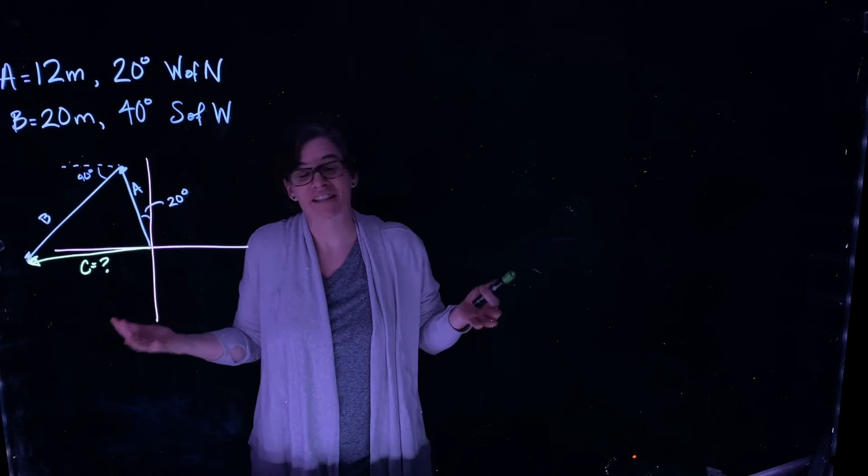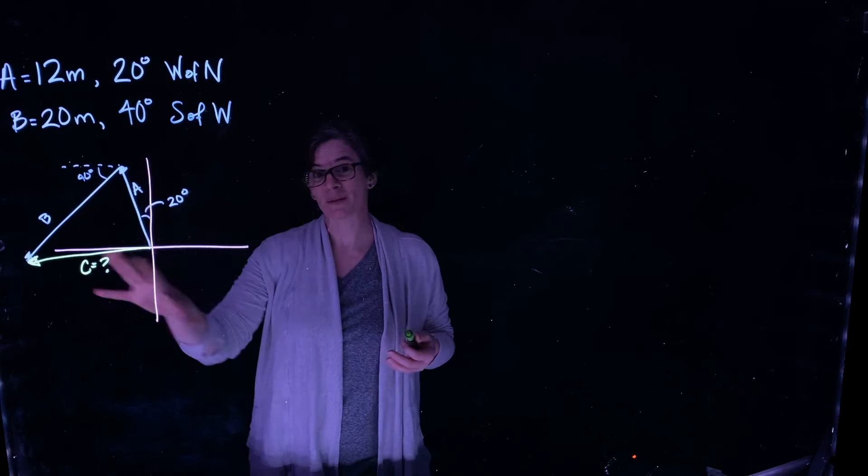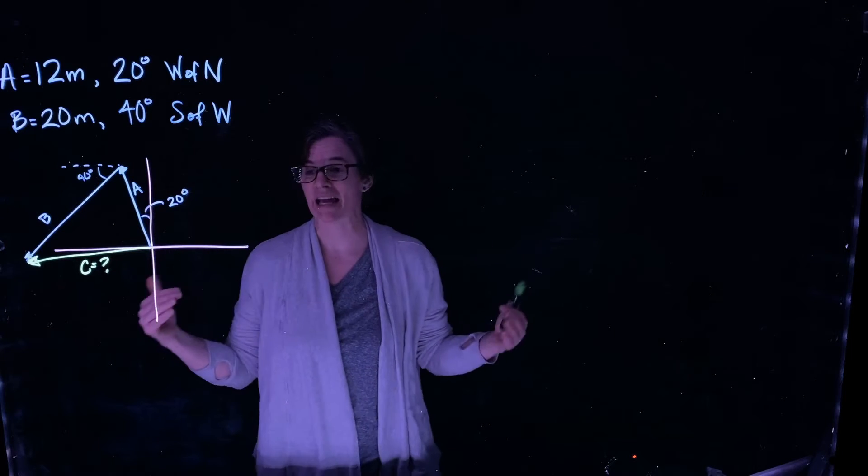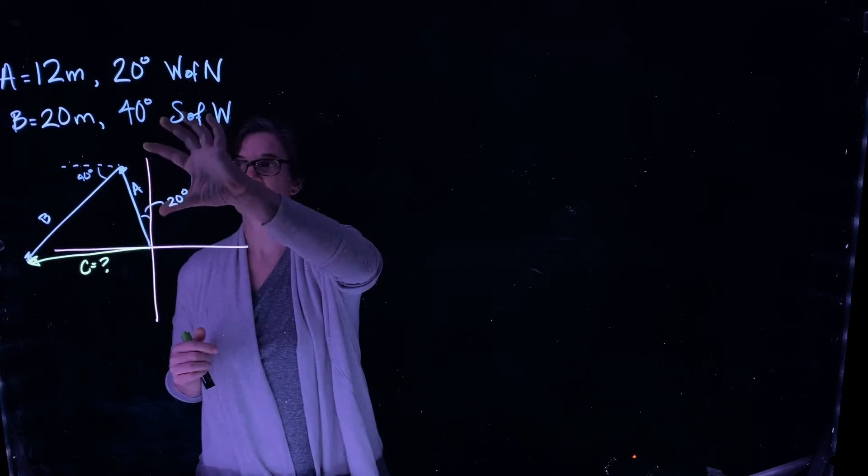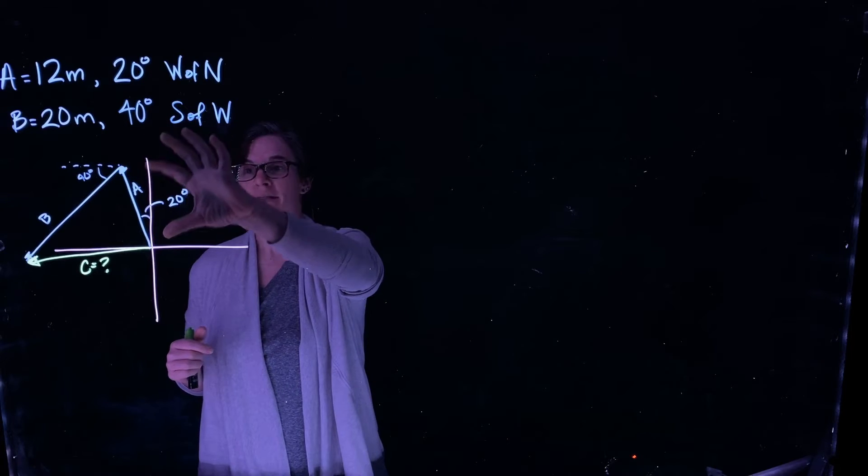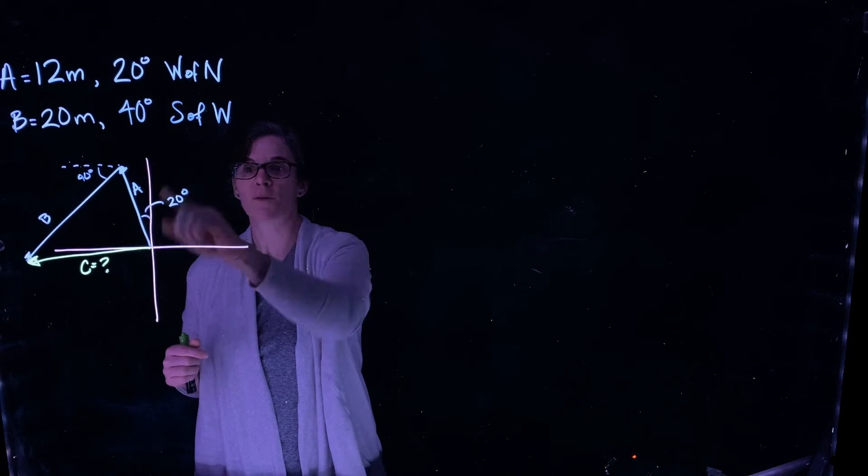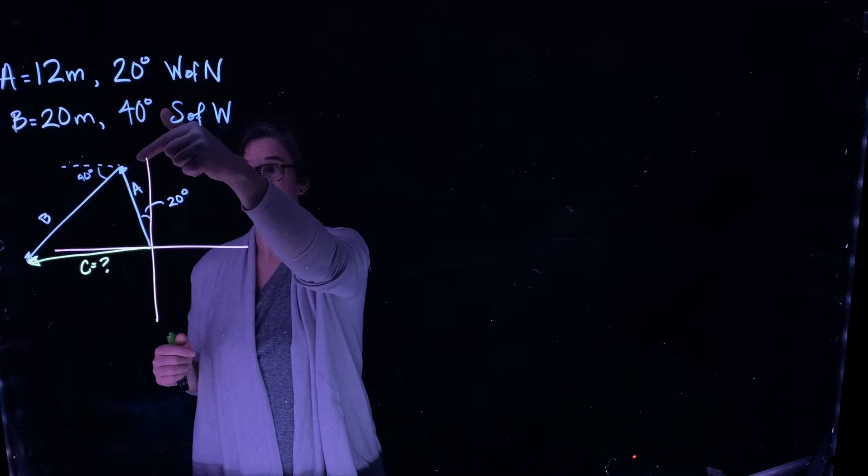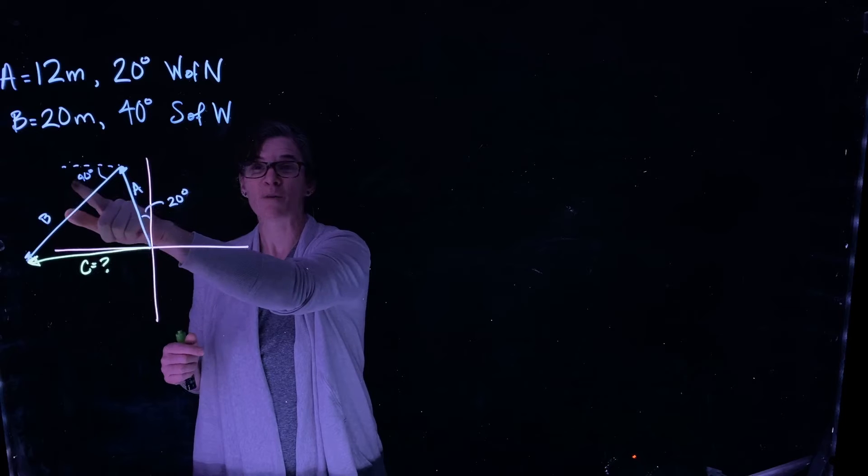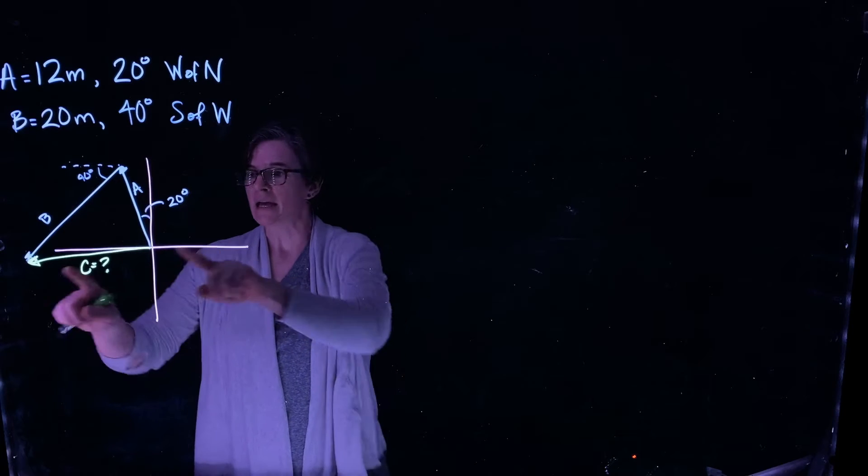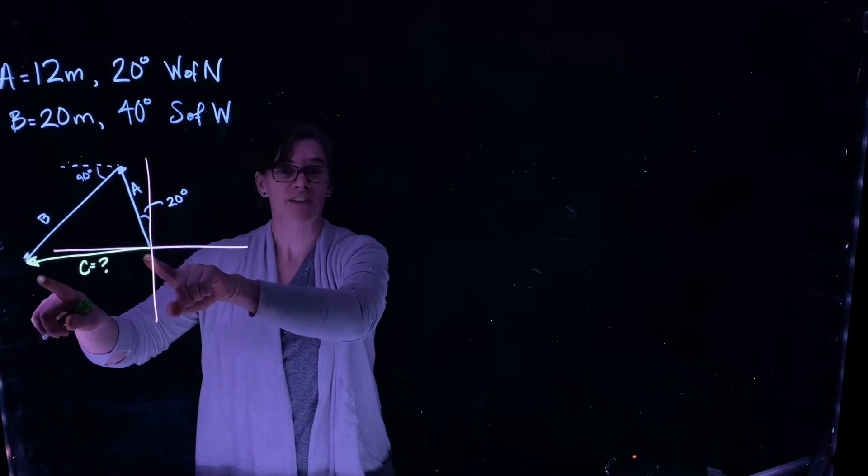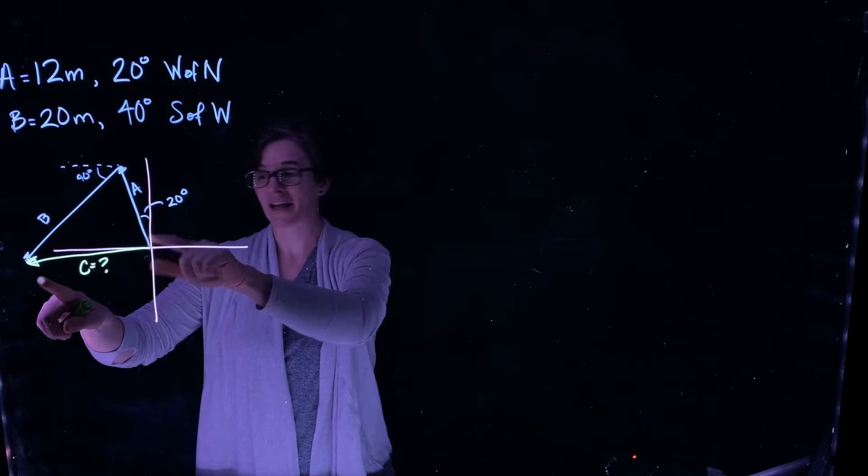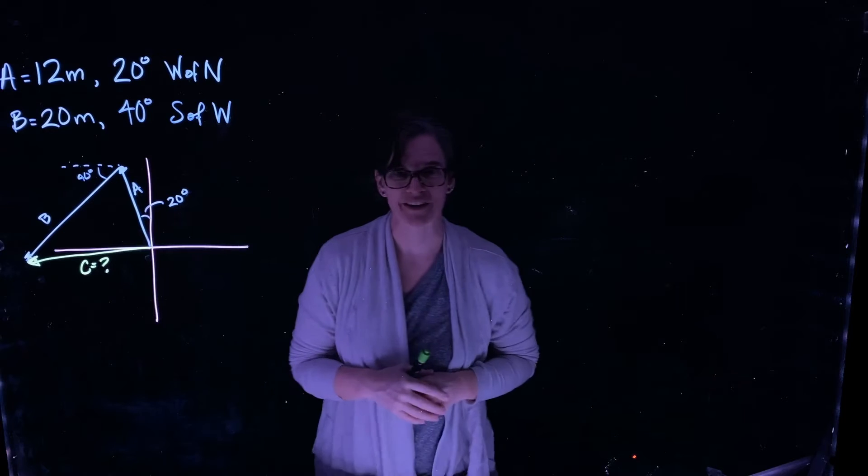So this is a vector addition problem. And so I've represented it in the graphical format, where we add tip to tail. So here's my vector A, which is 12 meters, 20 degrees west of north. I then turn and walk 20 meters, 40 degrees south of west. When I put those tip to tail, my resultant vector C is what I'm interested in, going from the beginning of vector A to the head of vector B.